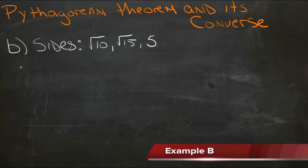Example B asks us the same question, only we have three different numbers this time. Are the numbers √10, √15, and 5 the numbers that represent three sides of a right triangle? Well, to check it, we need to put our two shorter sides...